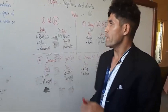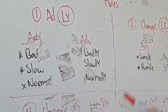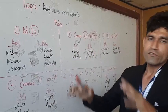The first rule that we have in adverbs of manner is we need to add -ly to the adjective. For example, the adjective 'bad' — we need to add -ly, so it becomes 'badly.' Slow becomes 'slowly.' Normal becomes 'normally.' This is the first rule that we have in adverbs of manner.